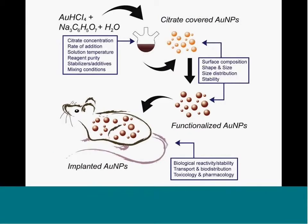I'm going to talk about gold nanoparticles. These are typically made by citrate reduction of gold chloride to make different sized nanoparticles, leaving you with citrate-covered gold nanoparticles. The experimental conditions—citrate concentration, rate of addition, solution temperature, reagent purity—all affect the final size, size distribution, and shape. Then you may want to functionalize them by displacing the citrate with a thiol that has some functionality, like a carboxylic acid, to which you can tether a protein. Each of these steps needs to be characterized in detail.